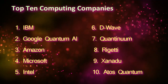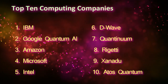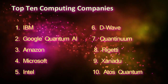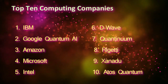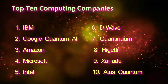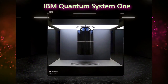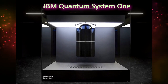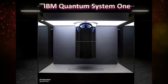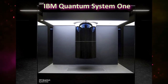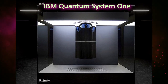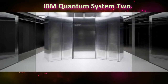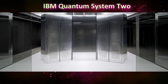Several industry giants have established themselves as pioneers in this space: Google Quantum AI, Amazon, Microsoft, Intel, D-Wave, Quantinuum, Rigetti, Xanadu, and IonQ. IBM Quantum System One is the first circuit-based commercial quantum computer, introduced by IBM in January 2019. It is a current leader in quantum computing with its launch of Quantum System Two, powered by IBM's chip called Heron, in December 2023.